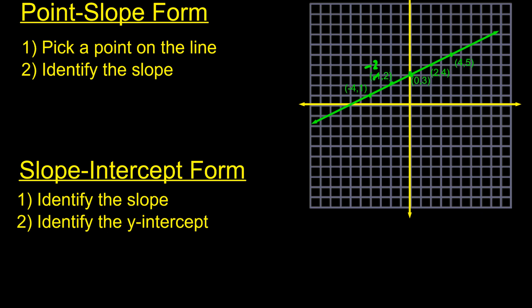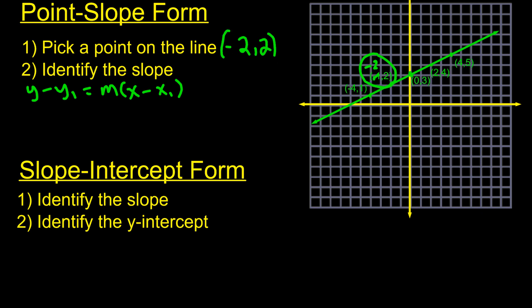With point-slope form, you're going to want to pick a point on the line and then identify the slope, and then you've got your equation. I picked the point (-2, 2). The point-slope formula is y minus y1 equals the slope times x minus x1. The slope is rise over run — we go up 1 and over 2 — so the slope is 1/2.